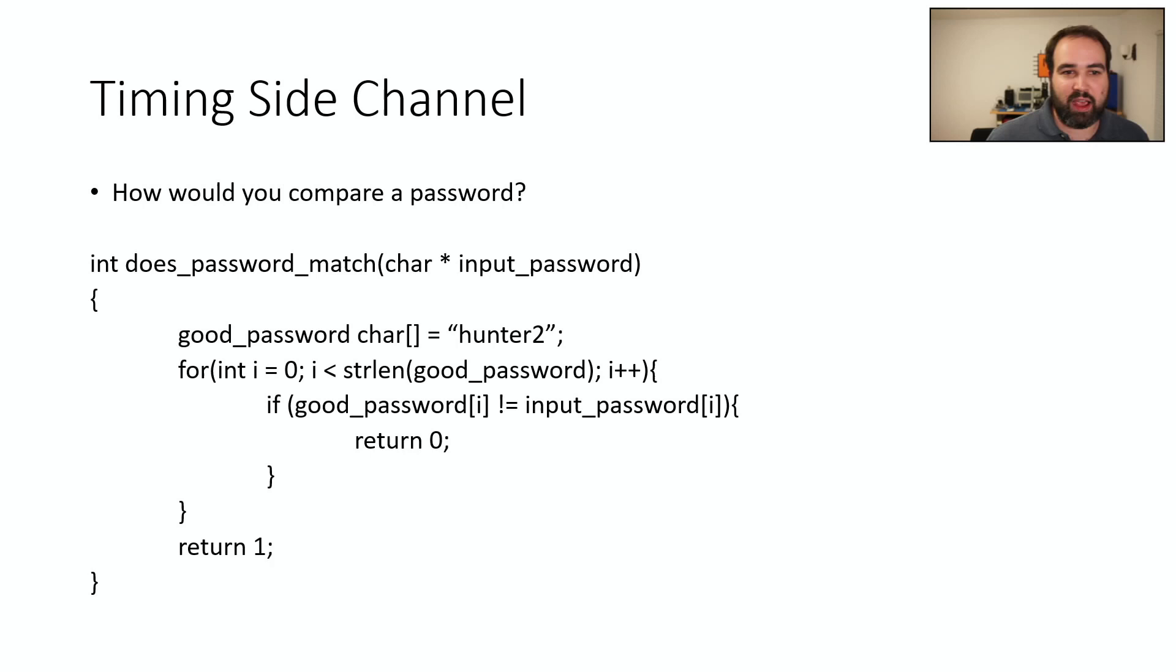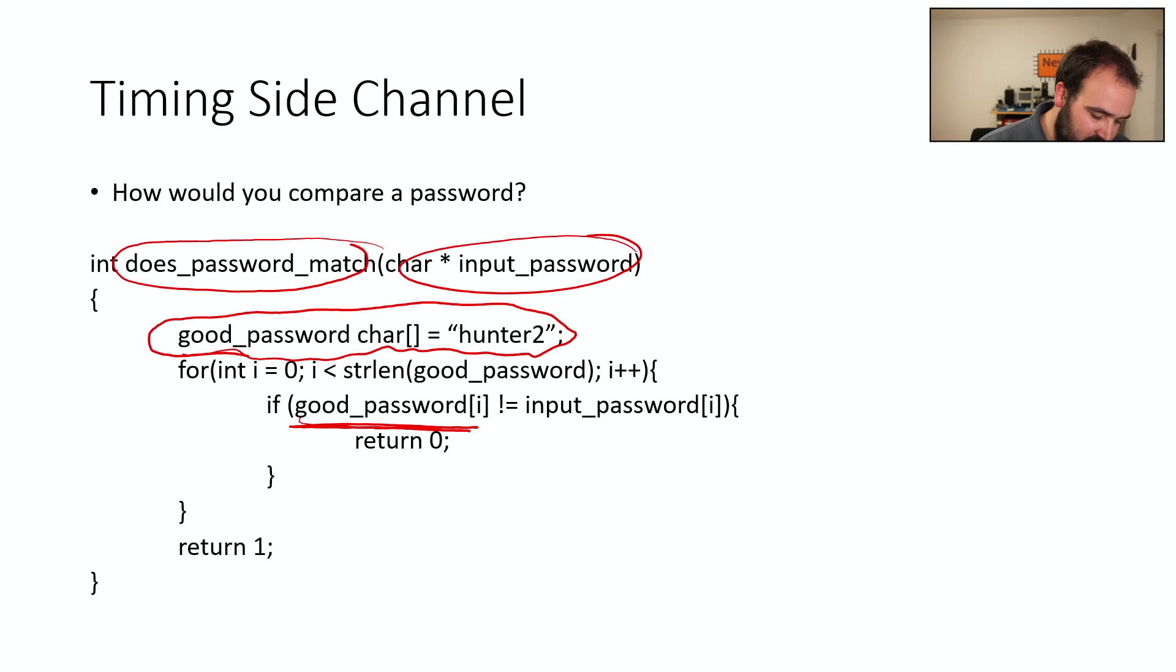Okay. So here's an example of a timing side channel. So we're going to jump right into code here. We have a little password match function. And so we put in a password at the top here and we have a known good password inside it. And what we do is we loop over the password and it's pretty straightforward. We just check is the password good? Does it match the correct password? As soon as it doesn't match, we return a zero. So let's return zero because it doesn't match.